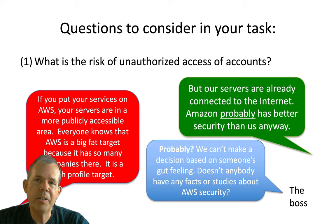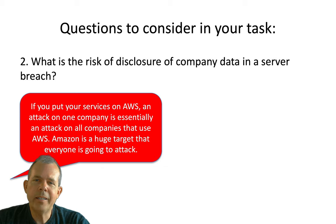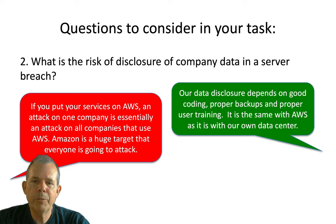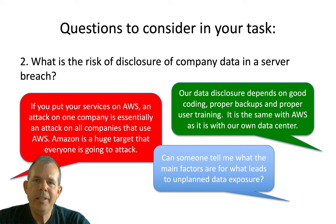Another question: what's the risk of disclosure of company data in case of a server breach? One view: an attack on AWS is essentially an attack on the entire system — if Amazon fails, all their customers will fail. The counter-view: disclosure doesn't depend on the servers Amazon runs, but on our own code, databases, and how we configure them — the service level is about the same and depends on how well we program. The boss asks: what are the main factors that lead to unplanned data exposure? Research is needed.